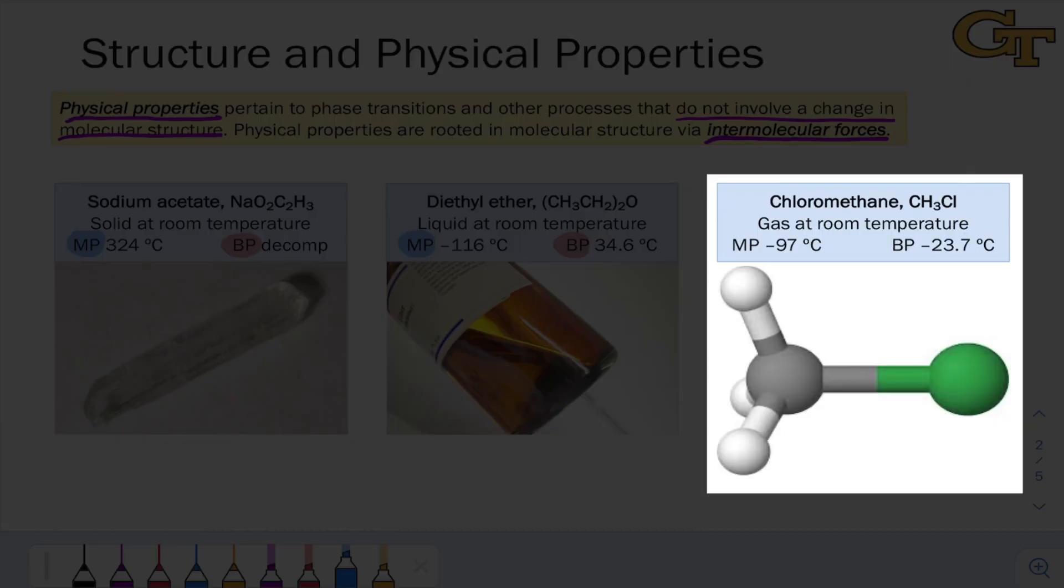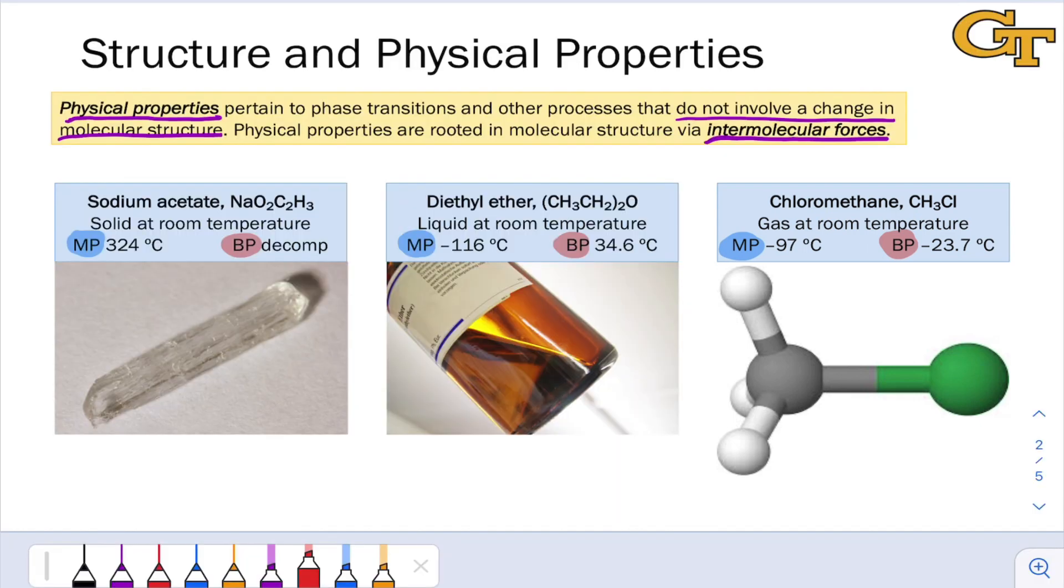Chloromethane melts at negative 97 degrees Celsius, but is a gas at room temperature, boiling at the very low temperature of negative 23.7 degrees Celsius. So here we have solid, liquid, and gas, and an absolute downward trend in the melting and boiling points. What we want to be able to do is connect that downward trend to properties of the molecular structures of these compounds.